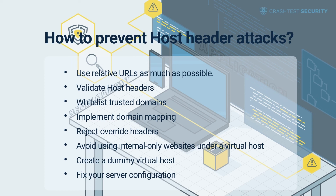Implement domain mapping: map every origin server to which the proxy should serve requests, i.e., mapping host names to websites. Reject override headers such as X-Host and X-Forwarded-Host, which are frequently used in header injections — servers sometimes support these by default, so double-check that this is not the case. Avoid hosting public and private websites on the same virtual host, as host header injections can be used to access internal private domains. Using Apache or Nginx, you can create a dummy virtual host to capture requests from unrecognized host headers and prevent cache poisoning. Finally, inspect and fix your server configuration, as host header injections are frequently due to default settings and faulty or old configurations.